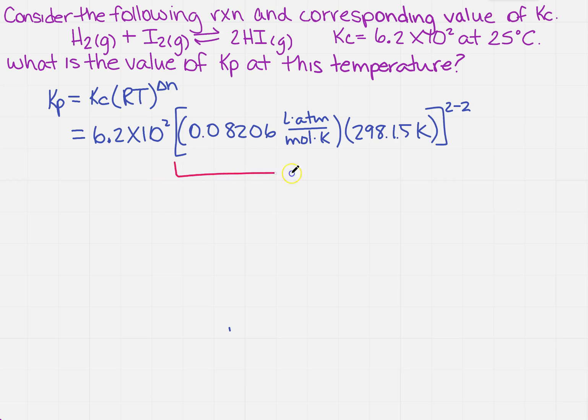What's really cool, this whole term right here is anything raised to the 0 power is 1, so I'm simply going to multiply 6.2 times 10 to the 2 by 1, so then the KP is going to be the same as the KC, so 6.2 times 10 to the second.